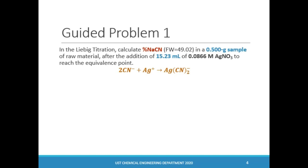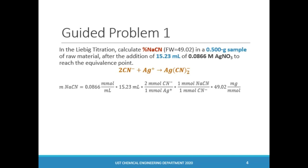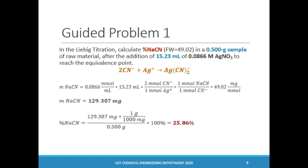To get percent sodium cyanide, we must first calculate the mass of sodium cyanide that reacted with the moles of titrant used. Calculate the moles of silver nitrate from the given volume and molarity, then multiply by the correct stoichiometric ratio based on the chemical reaction, and finally multiply by the molecular weight of sodium cyanide to get 129.307 mg of sodium cyanide. The percent sodium cyanide is obtained by dividing the calculated mass by the given mass of the sample and multiplying by 100%, giving us 25.86% sodium cyanide.